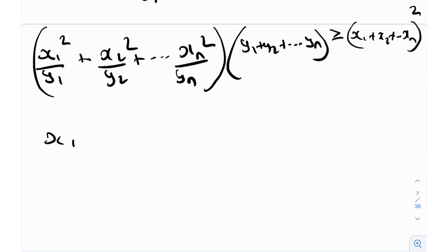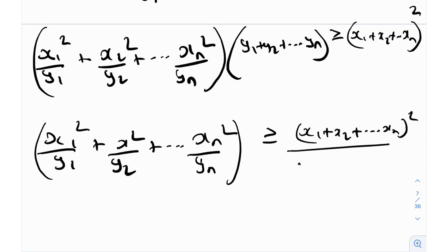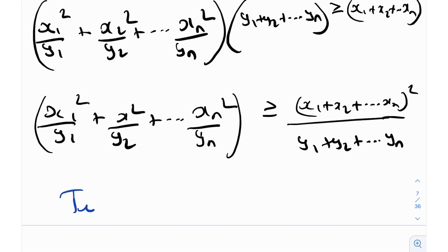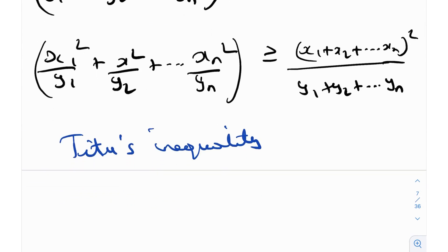In other words, x₁²/y₁ + x₂²/y₂ + … + xₙ²/yₙ is greater than or equal to (x₁ + x₂ + … + xₙ)² divided by (y₁ + y₂ + … + yₙ). This is called Tito's lemma or Tito's inequality — it's just a special case of Cauchy-Schwarz obtained by this substitution.